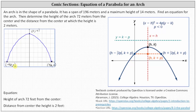Notice how this gives a width along the x-axis of 196 meters, which is the span of the arch. From here, we need to recognize the equation would be in the form (x − h)² = 4p(y − k), where (h, k) is the vertex. And because the parabola opens down, p would be less than zero.